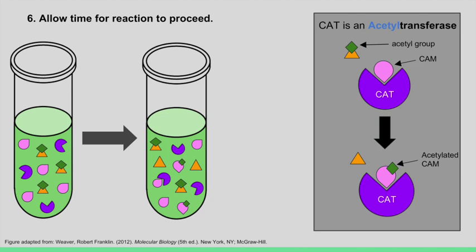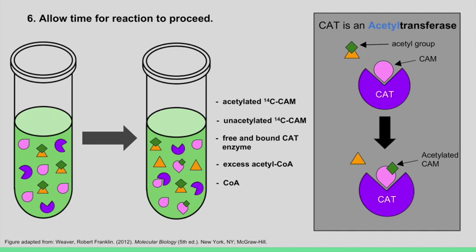By the end of our reaction, our solution will contain the following: carbon-14 labeled CAM that has been acetylated by the CAT enzyme. There will also be unacetylated carbon-14 labeled CAM that has not had the chance to react with CAT. There will be both free and bound CAT enzyme. There will be excess acetyl-CoA. And lastly, there will be CoA that has had its acetyl group removed.